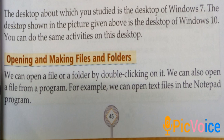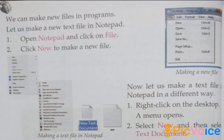We can also open a file from a program. For example, we can open text files in programs. We can make a new file in programs. Let us make a new text file in notepad. Step 1: open notepad and click on file. Step 2: click new to make a new text file.